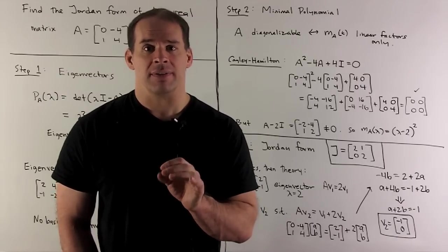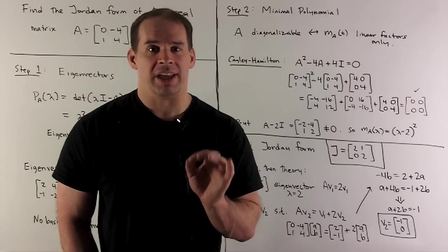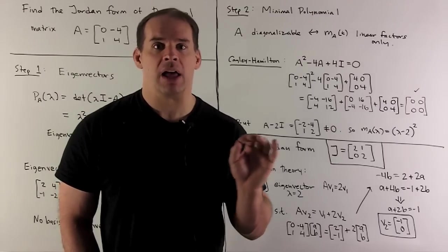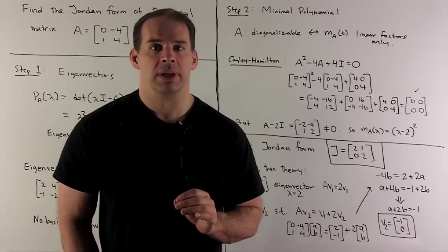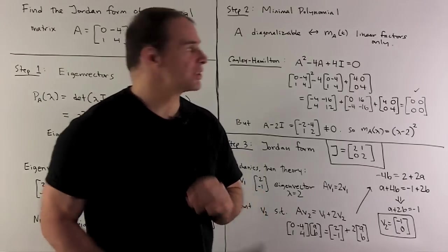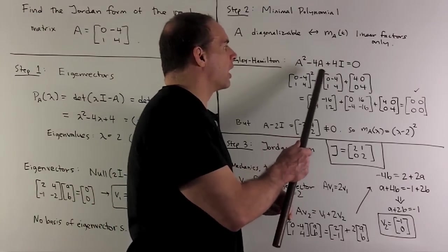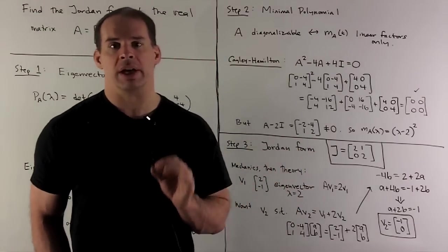The idea here is, if I take a matrix A, we put it in its characteristic polynomial as a matrix polynomial, what comes out is the zero matrix. In our special case, that means A² - 4A + 4I equals the zero matrix.